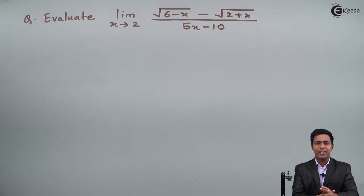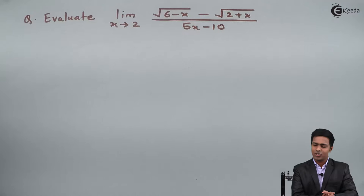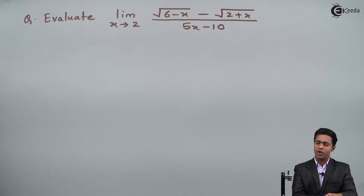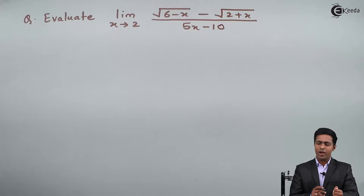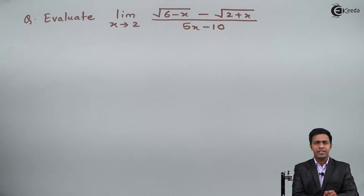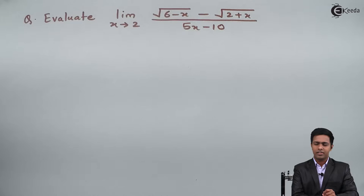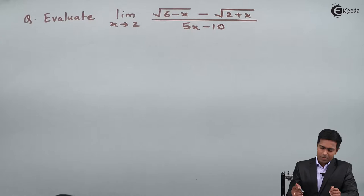Hello everyone. In this problem we have to evaluate the limit as x tends to 2 of (√(6-x) - √(2+x)) / (5x-10). Before starting the solution, if you observe the given function, it is an algebraic function. Whenever we have an algebraic function in a limit, we start with the direct method. If we get 0/0 by the direct method, then we say direct method fails and look for some other method.